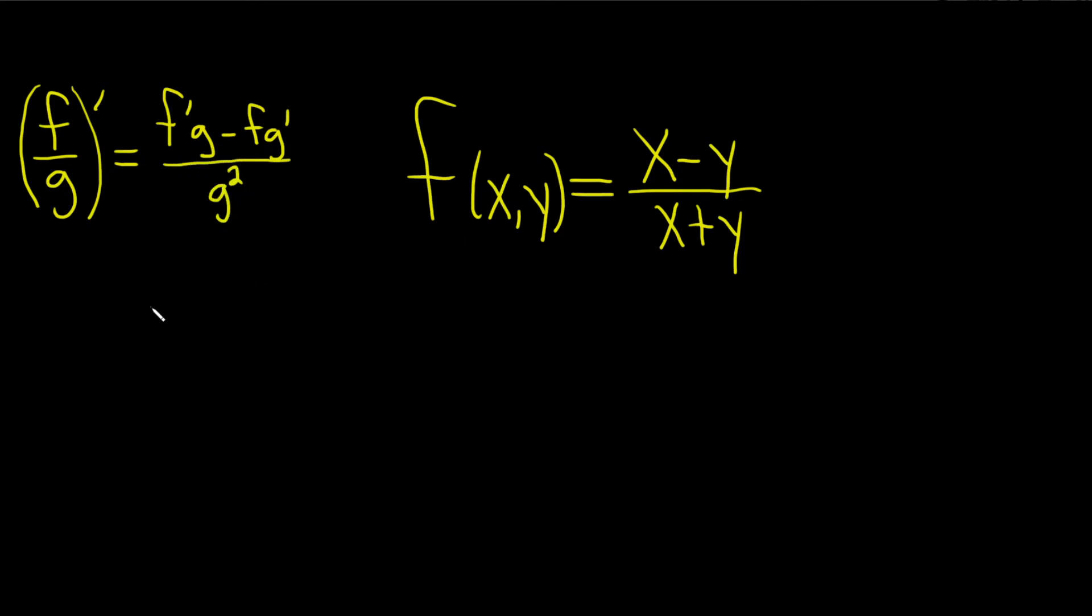So here when we take the partial with respect to x, our top function is x minus y and our bottom function is x plus y. Now when we compute partial derivatives, we treat all of the other variables as constants. So the derivative of negative y here is going to be zero.